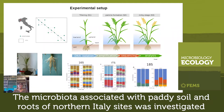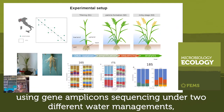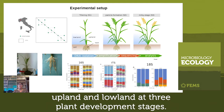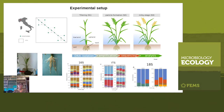The microbiota associated with paddy soil and roots of northern Italy sites was investigated using gene-amplicon sequencing under two different water management conditions — upland and lowland — at three plant development stages.